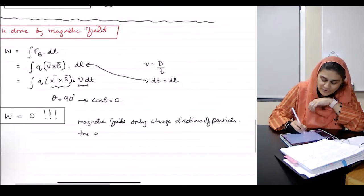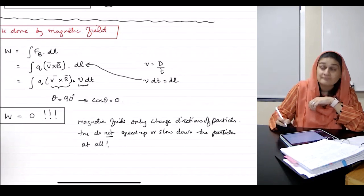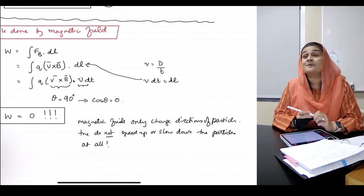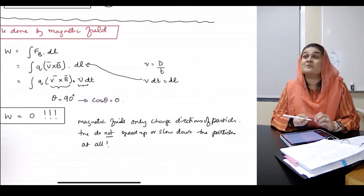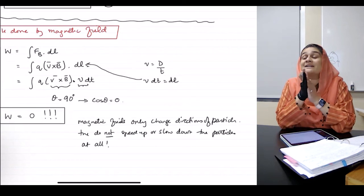They do not speed up or slow down the particles at all. This is why in particle accelerators, when we need to speed up the particles, we have to put them through an electric field.